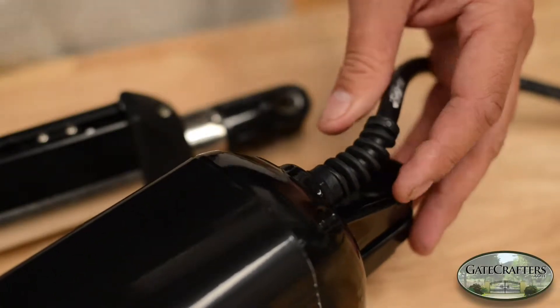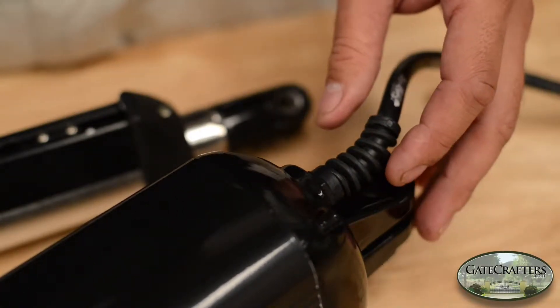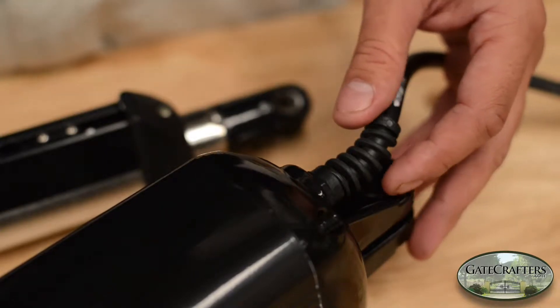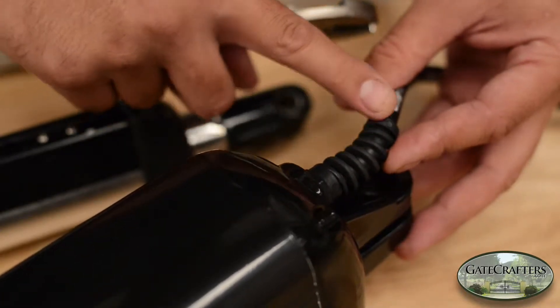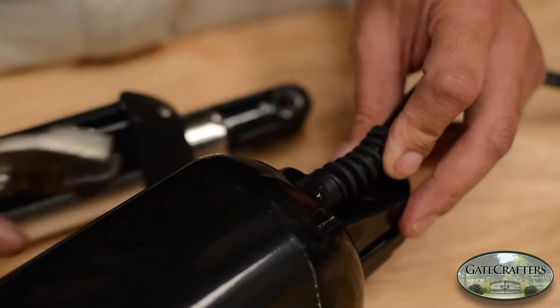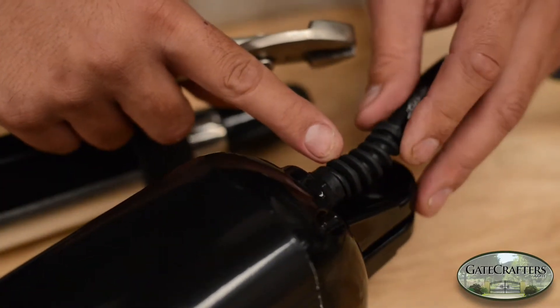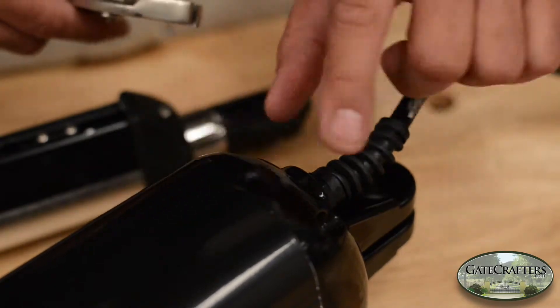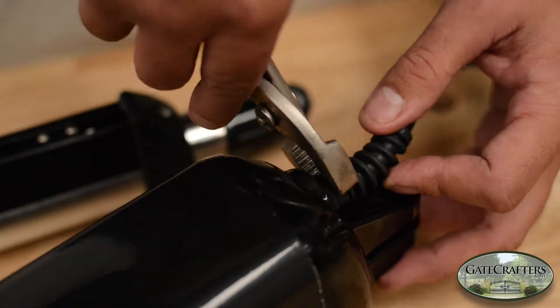Today we're going to be replacing the wire on the Estate Swing ES-1000D. What sometimes can happen is this wire can get damaged right here on the back, and sometimes the limit switches cannot work because of it. So today we're going to be replacing this wire to make sure the limit switches are working correctly.